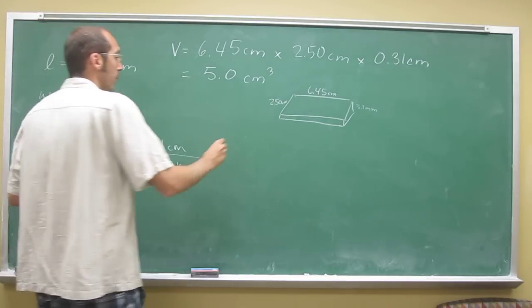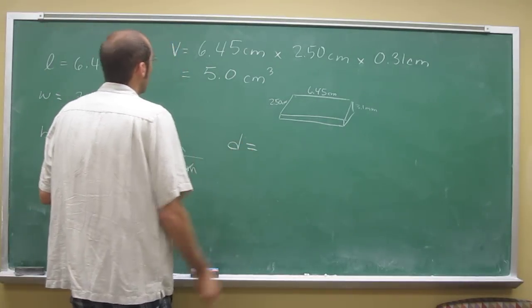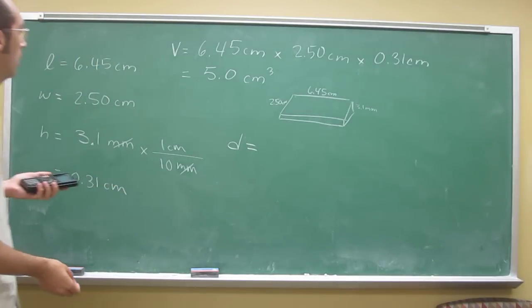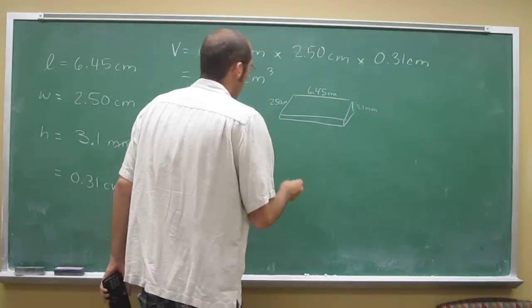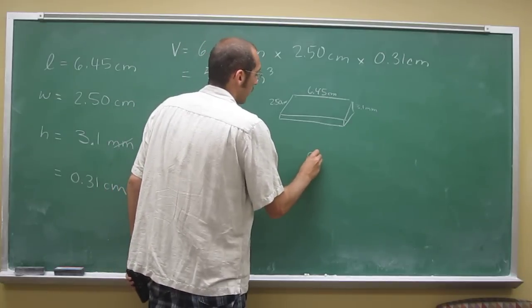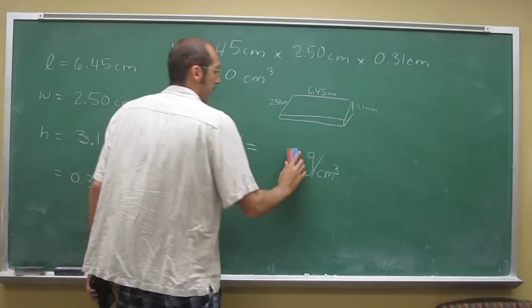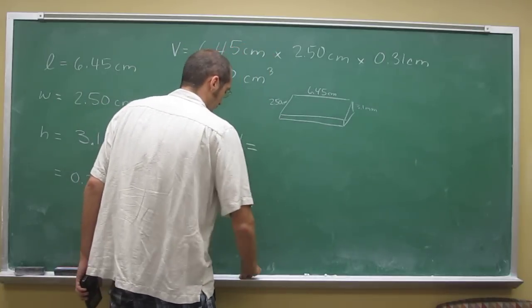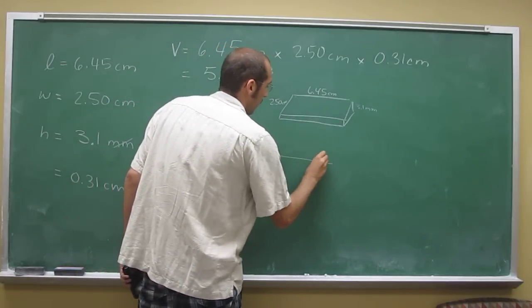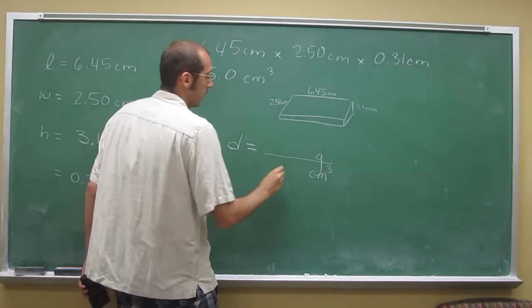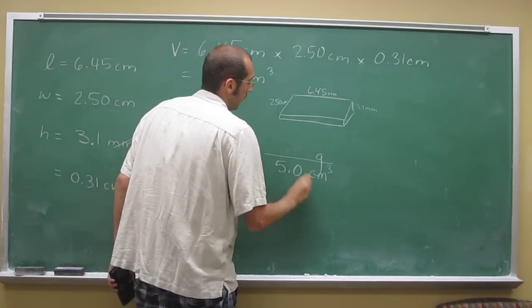Remember, the density is mass divided by volume. If you recall, it's going to be in units of grams per centimeters cubed. Grams per centimeters cubed—we already know what the centimeters cubed is: 5.0.